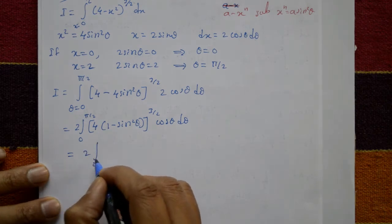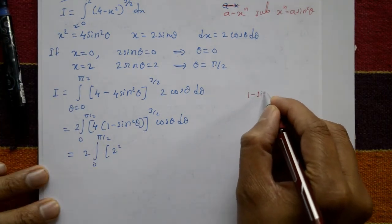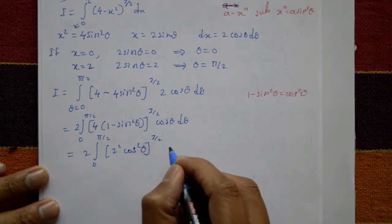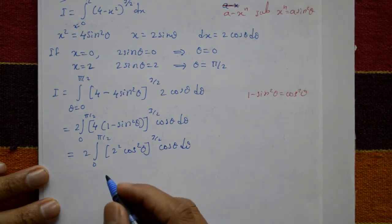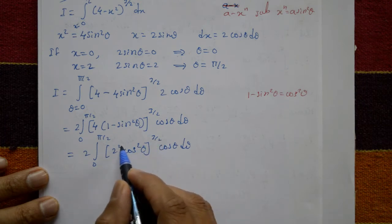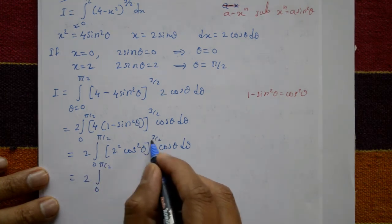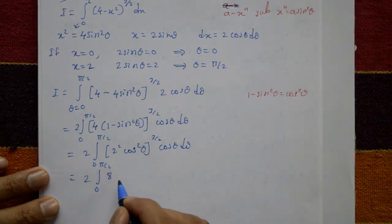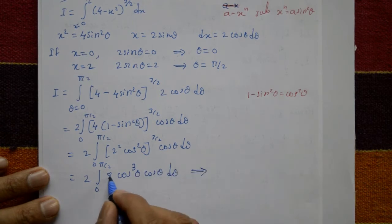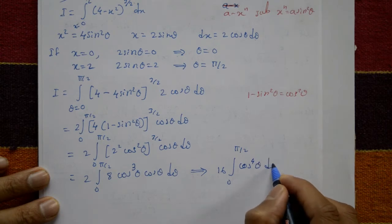Since 4 equals 2 squared and 1 minus sine squared theta equals cos squared theta, we get (cos squared theta) to the power 3 by 2 equals cos cubed theta. Combining all constants: 2 times 2 cubed equals 16, giving 16 times the integral of cos to the power 4 theta d theta.